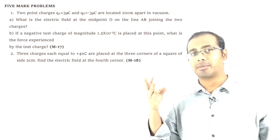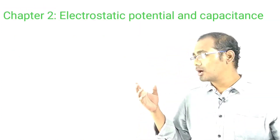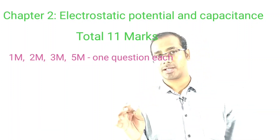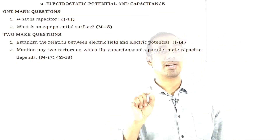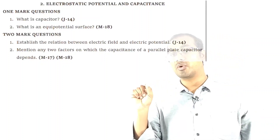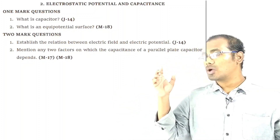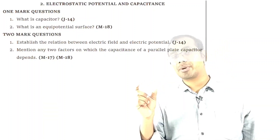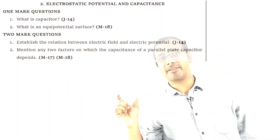That covers chapter 1: 1 mark, 2 marks, 3 marks, and 5 marks questions. Now the second chapter — 11 marks total. For 2 marks, first important question: establish the relation between electric field and electric potential.